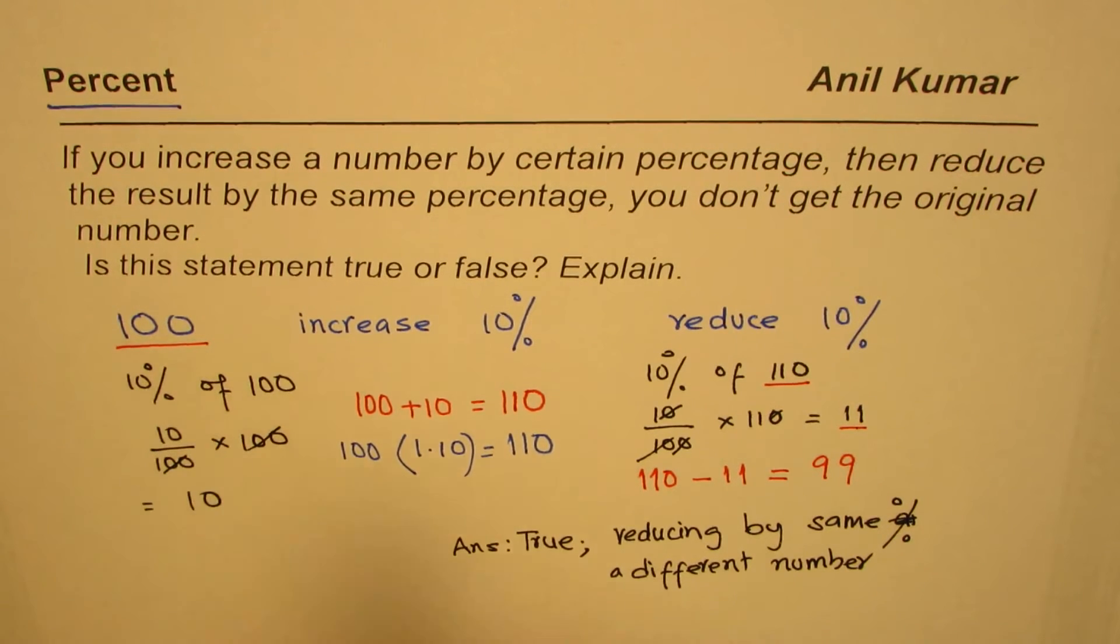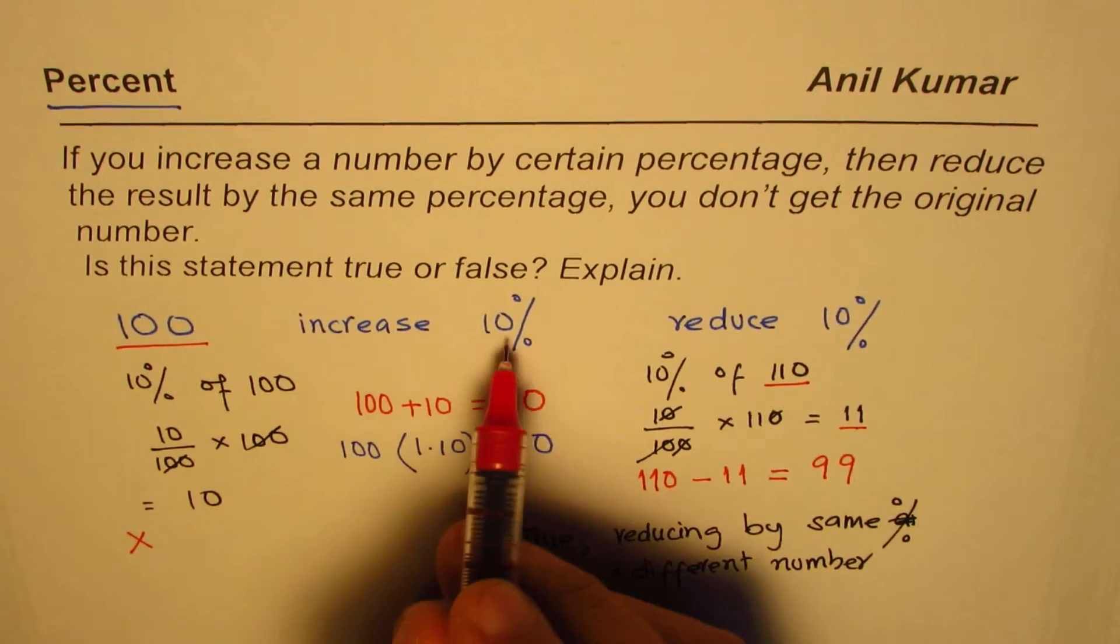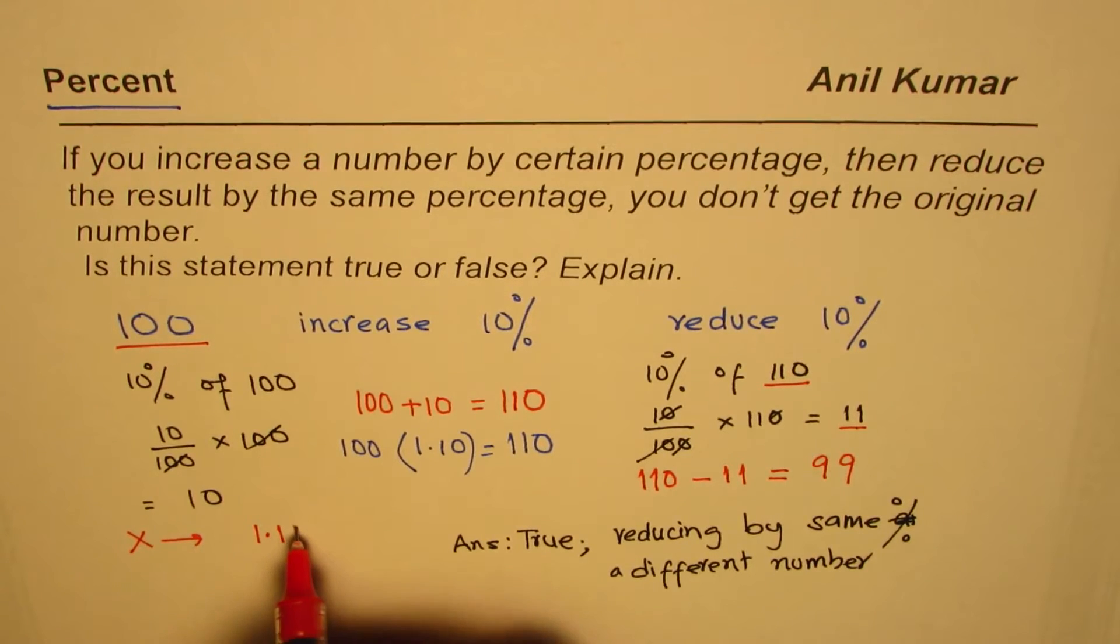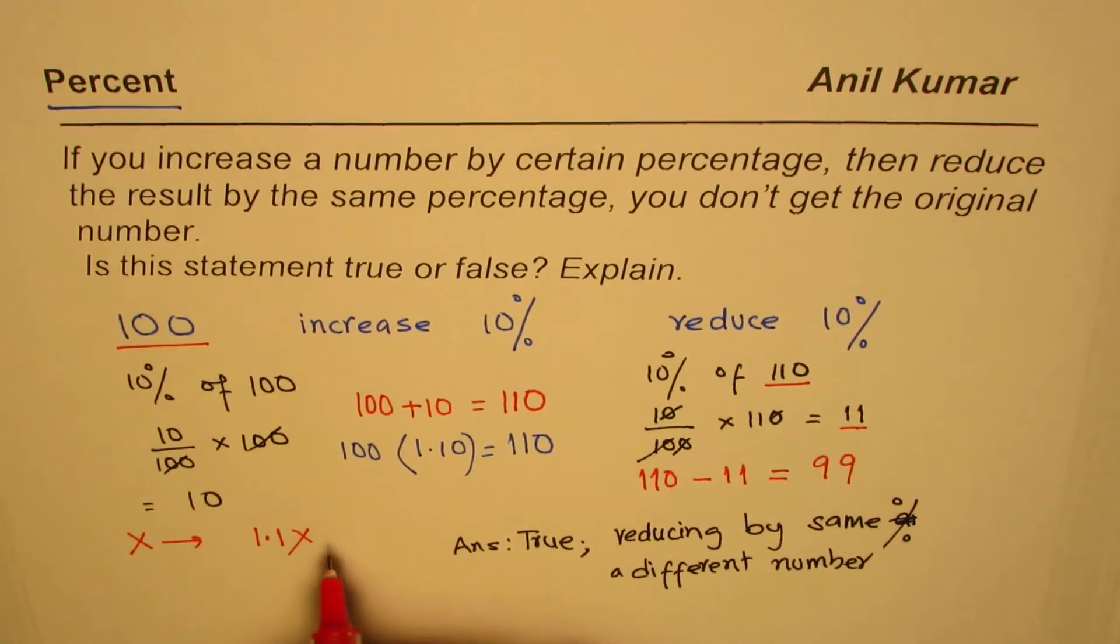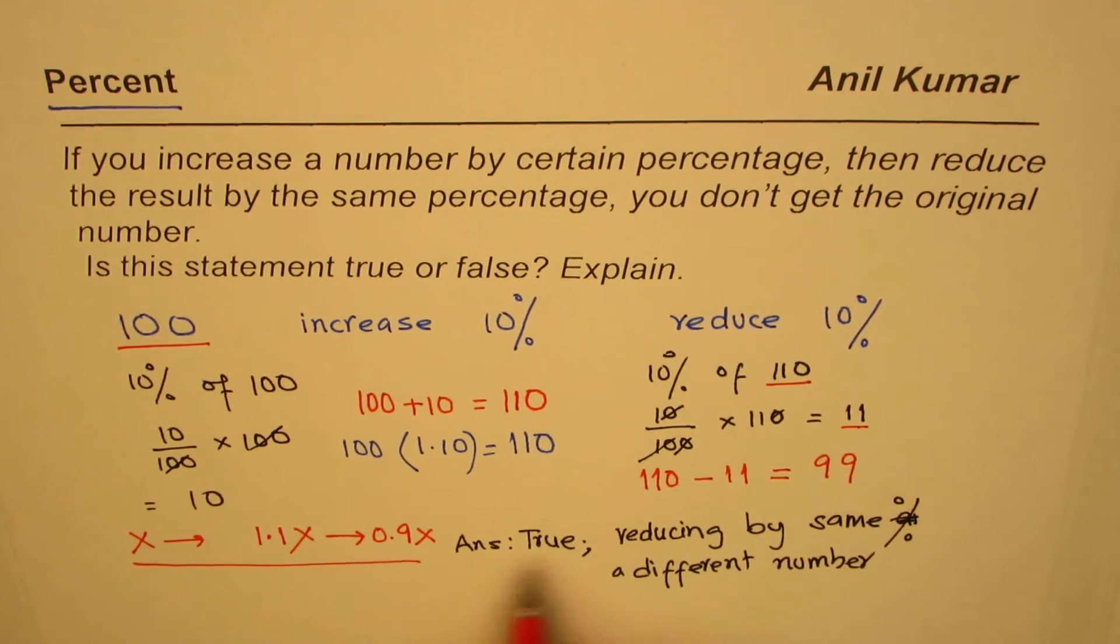Some of you could also start with a general number, let us say x. When you increase by 10 percent it becomes 1.1 times x. And now when you reduce by 10 percent it will become 0.9x. I'd like you to practice with a general number, make a similar example so that you could write it for sure that it is all